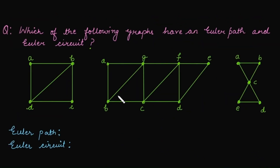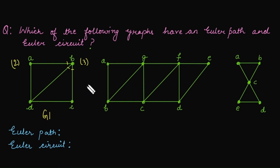Let's identify whether these graphs have an Euler path or Euler circuit by calculating vertex degrees for G1. Degree of vertex A is 2, degree of vertex B is 3 — an odd degree, so G1 does not have an Euler circuit. Degree of vertex C is 2 and degree of vertex D is 3. There are exactly two vertices of odd degree, so G1 has an Euler path.